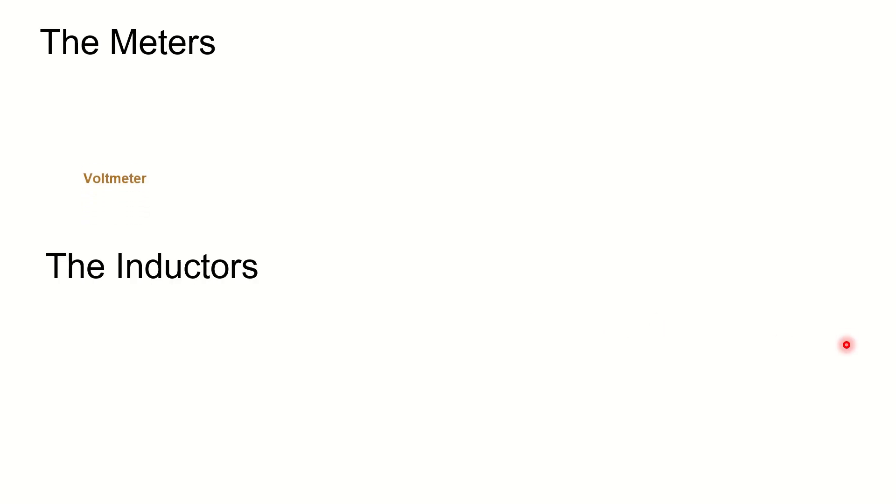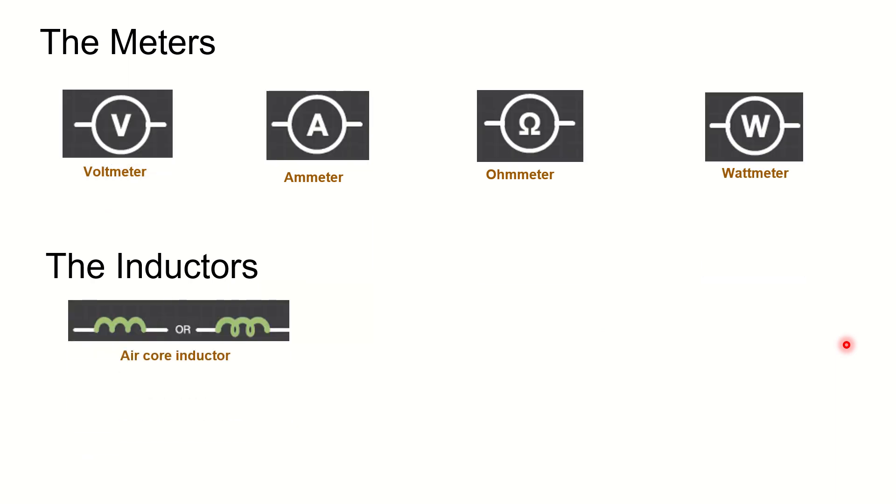We are going to see the meters right now one by one. Voltmeter - you can see that it's just a V with a circle around it. Ammeter - A with a circle around it. Ohmmeter - the Ohm symbol is there. And wattmeter - W is there.